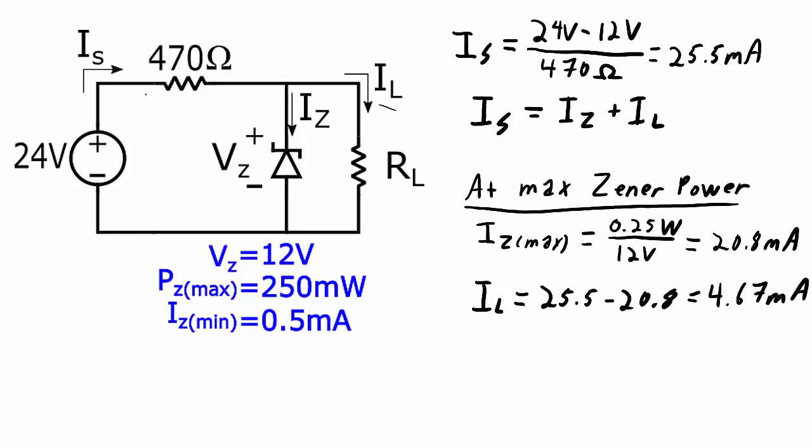So at this maximum zener power state, the load current is going to be 4.67 milliamps. And in order to have 4.67 milliamps, when we have 12 volts across that load, RL will be 12 volts divided by 4.67 milliamps. And that works out to 2,571 ohms.